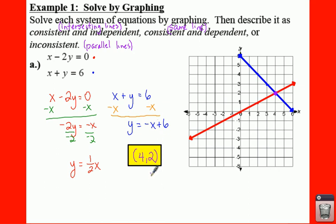So in this case, if you have two lines that intersect, this is going to be intersecting lines. So this would be consistent and independent.